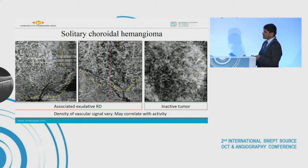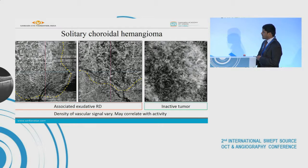This probably indicates the vascular density or flow characteristics within the tumor — if we see a lot of bright signals within the tumor it would indicate tumor activity, but if we see a large number of signal void areas it would indicate an inactive tumor.